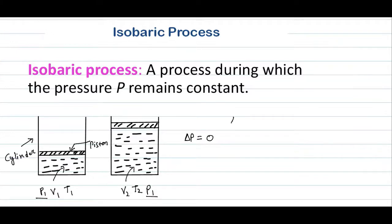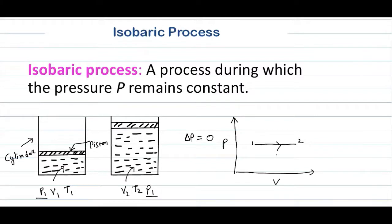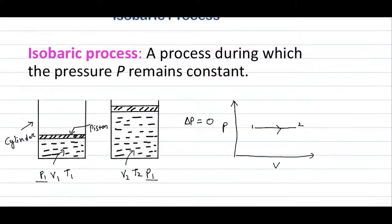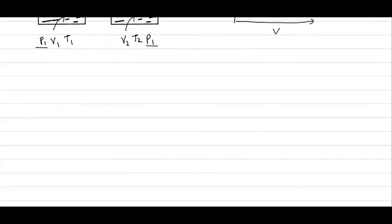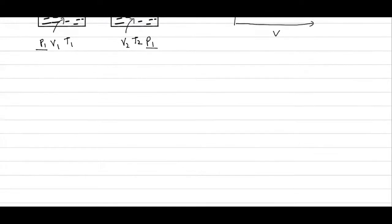Let's understand the isobaric process with the help of a PV diagram. With pressure on the y-axis and volume on the x-axis, the initial state is point one and the final state is point two. This horizontal line from one to two represents the isobaric process.